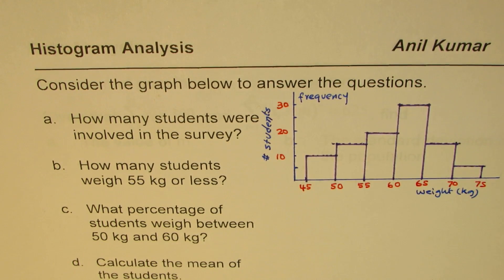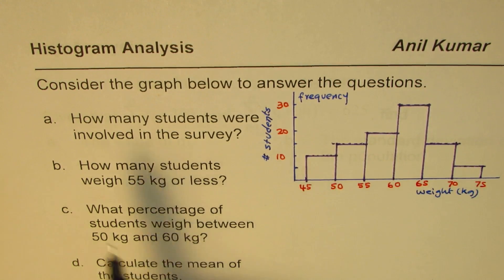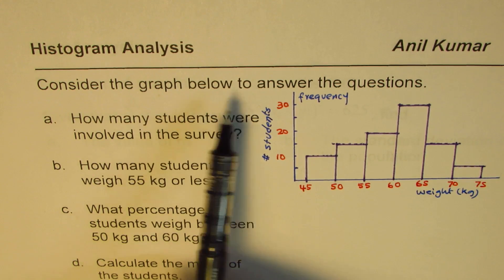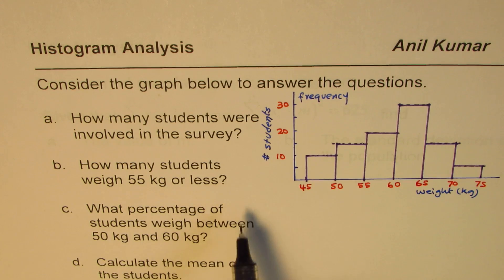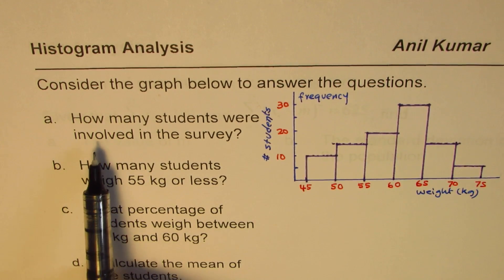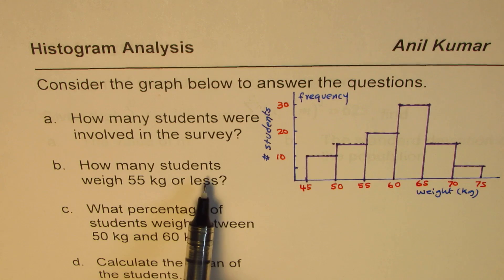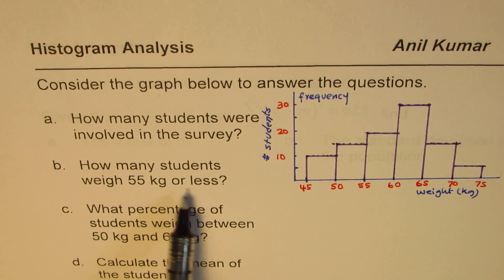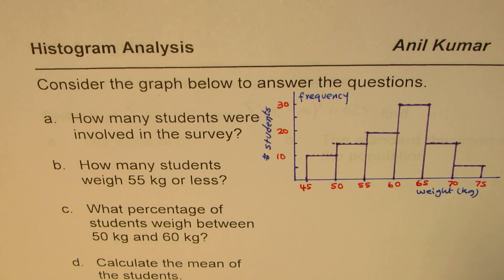I'm Anil Kumar and in this video we are going to read information from a histogram. The question here is: consider the graph below to answer the questions. Part A is how many students were involved in the survey. Part B: how many students weigh 55 kg or less. Part C: what percentage of students weigh between 50 kg and 60 kg. Part D: calculate the mean of the students.